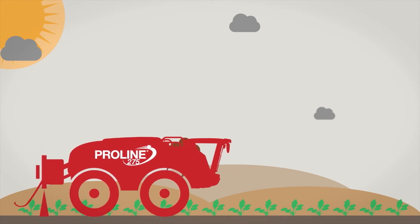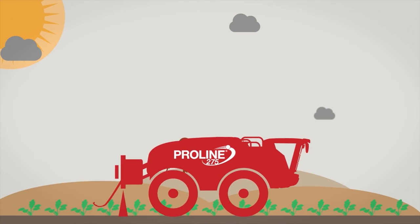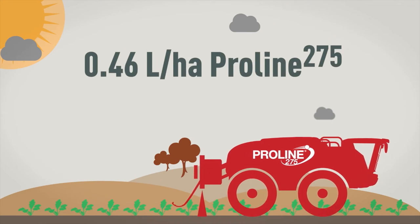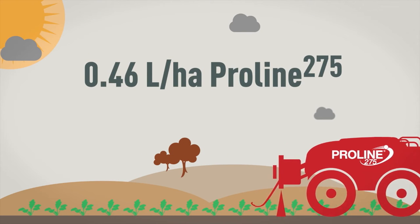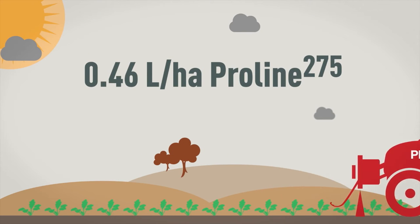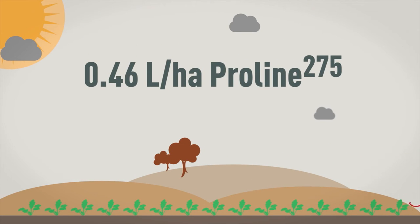After infection is detected, or before fields become too wet to travel on, a 0.46 litres per hectare application of proline will stop the disease developing further, protecting the plant through winter.